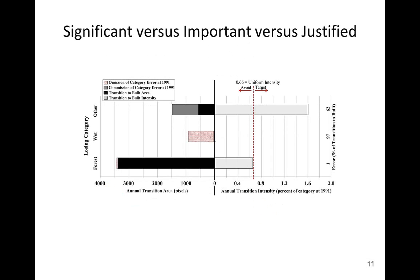Some researchers ask how large must a deviation from uniform be in order to qualify as significant? The word significant has a precise meaning in inferential statistics: it means that variation due to random sampling cannot account for the observed deviation from the null hypothesis. However, the examples in our video analyze the entire population of pixels and do not involve sampling. Thus, we do not use inferential statistics, and therefore we do not use the words significant and insignificant.